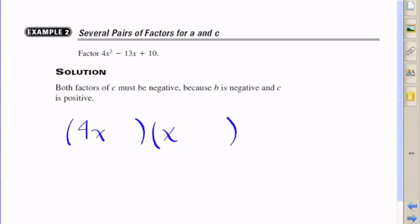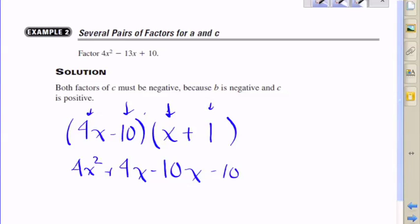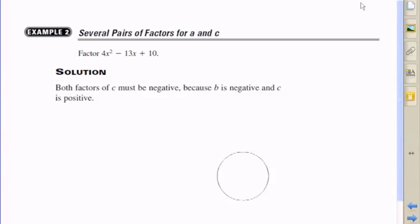So let's try 4x times x. That'll be 4x squared. Now we need two numbers whose product is 10 and sum is negative 13. So let's check it out. 4x times 1, that is 4x. Negative 10 times x, negative 10x, which brings us to negative 6x. And then now we have minus or plus 10, and that's just not going to work.